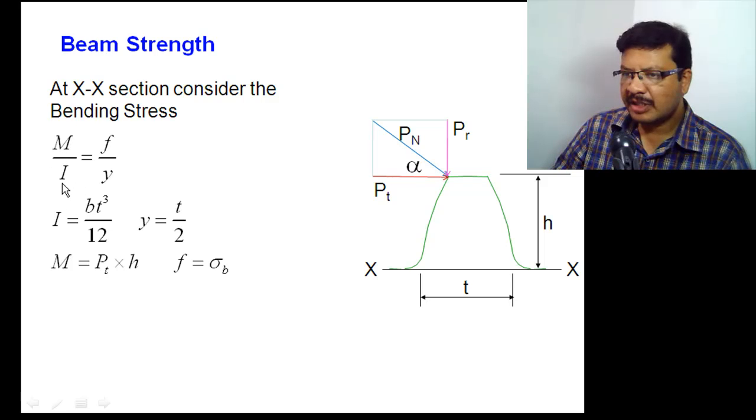Then I is moment of inertia. Moment of inertia at this section. So here, b is the face width and t is the thickness at the root. That means moment of inertia will be bt³/12. Distance up to the neutral fiber, that is nothing but t/2, y equal to t/2. Bending stress, I am denoting with sigma b. This is the terminology.